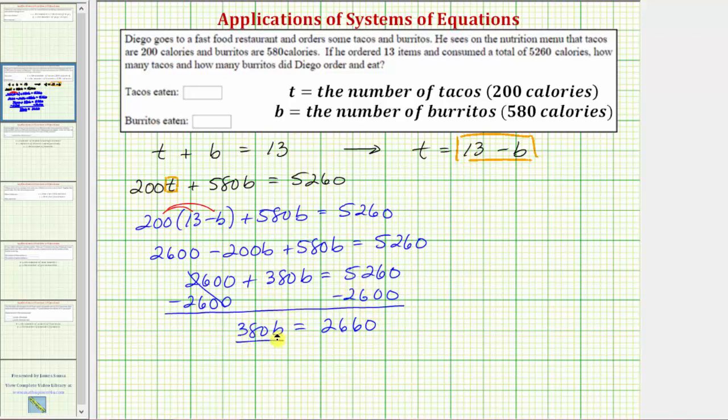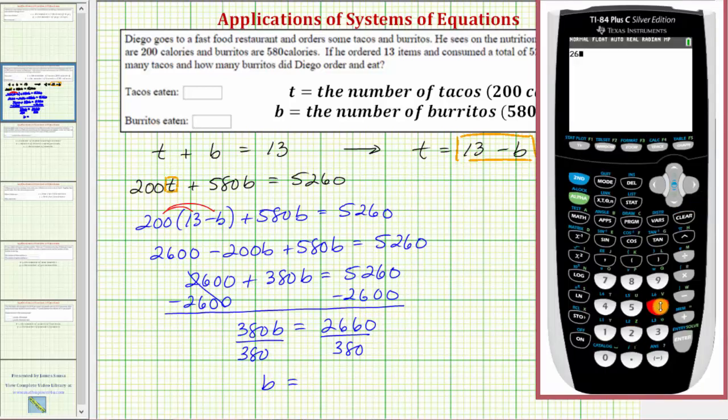Last step, divide both sides by 380. Simplifying, the left side simplifies to just b and 2,660 divided by 380 is equal to seven.